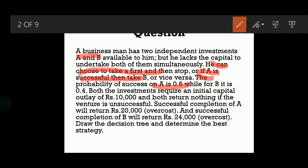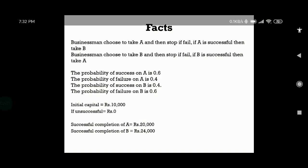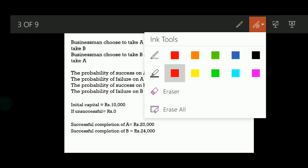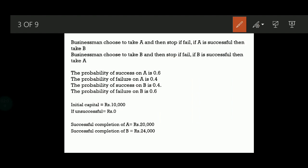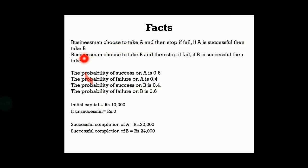The success rate of A and the success rate of B are also given. For starting both of them, we need 10,000 rupees as the initial capital. If A is completed successfully, it will get a return of 20,000, but B is much better because you will get 24,000. So we are supposed to find out which is the best strategy. The businessman can choose to take A and then stop if he fails, or if A is successful, then take B. Again, he can choose to take B and then stop if B fails, and then take A.